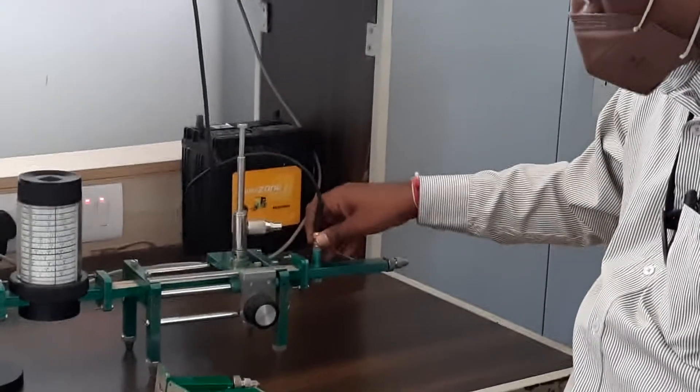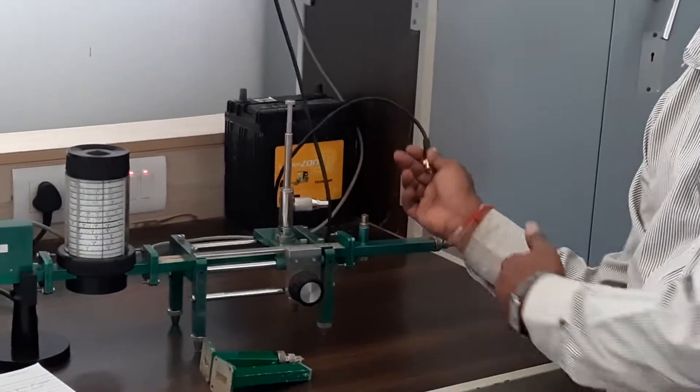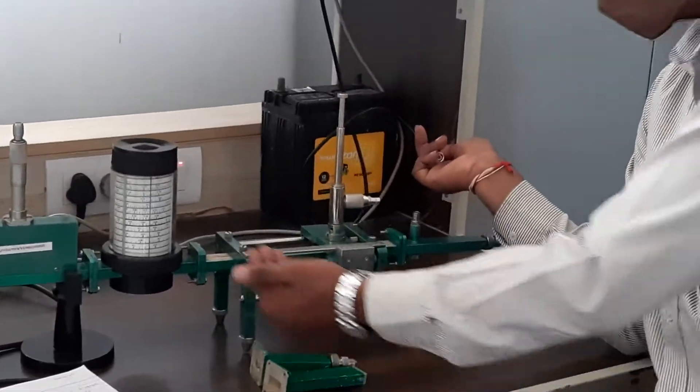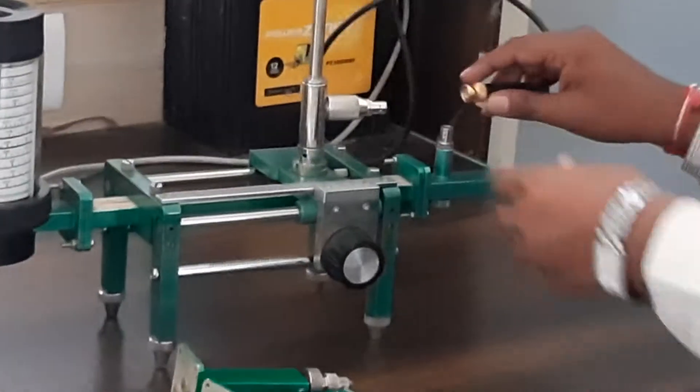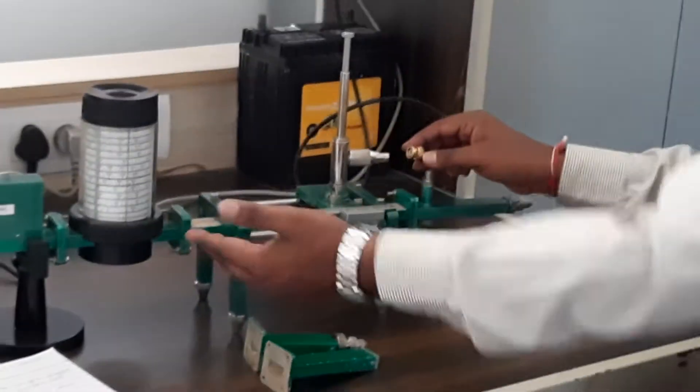So now since this is the load, we will be having the reflections which will be coming from the load and those will be captured in the slotted waveguide. So there will be interaction of the voltages, V min, V max, everything in the slotted waveguide.